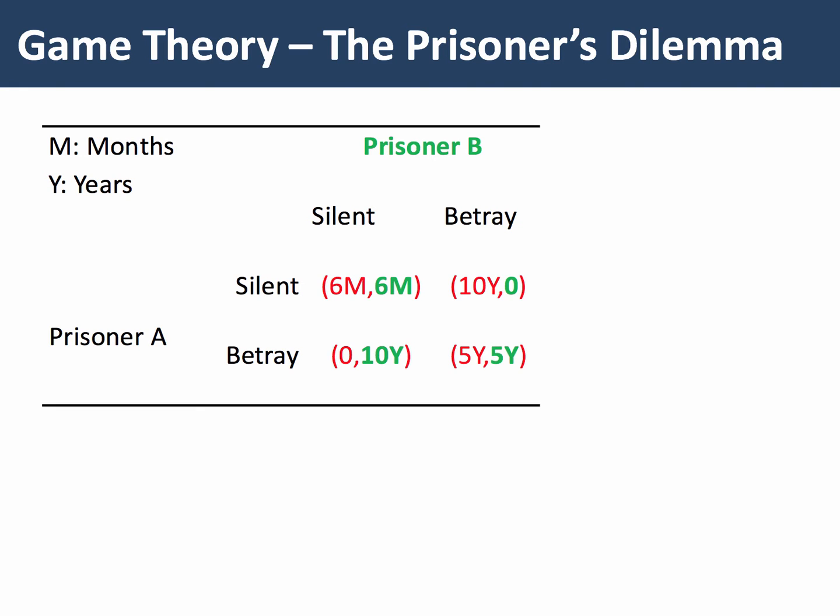For example, if both prisoners choose to remain silent, they'll get six months each in prison. If they both choose to betray each other, they'll get five years each.